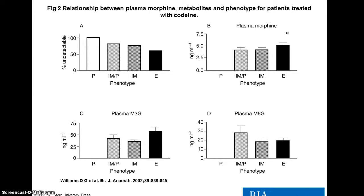Once children were assigned to a phenotype, researchers examined their samples looking for morphine and the glucuronide metabolites. Very strikingly, children predicted to be poor metabolizers had undetectable levels of morphine as well as undetectable levels of both morphine 3-glucuronide and morphine 6-glucuronide. It appears that poor metabolizers were unable to convert codeine via the CYP2D6 pathway into morphine, and furthermore unable to produce either glucuronide metabolite from that morphine.